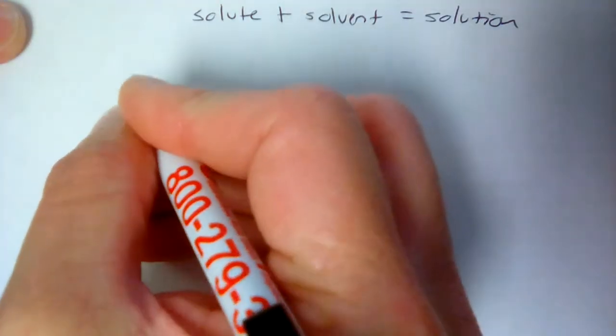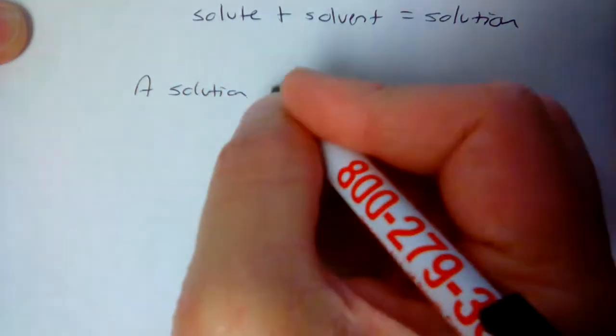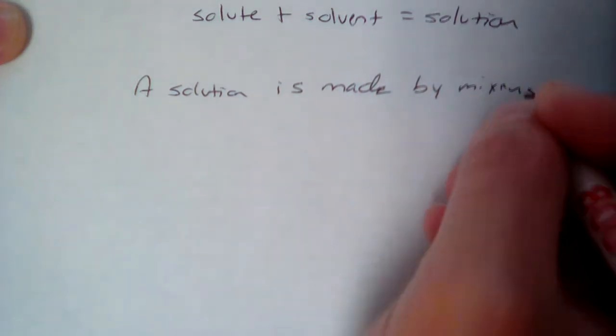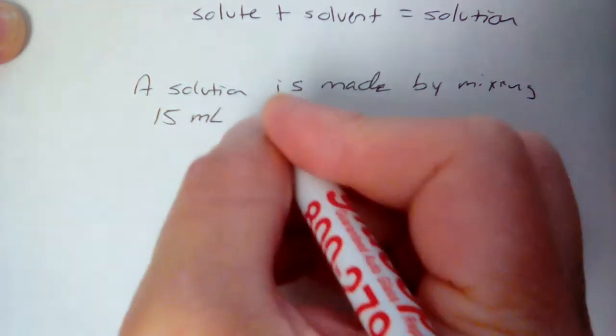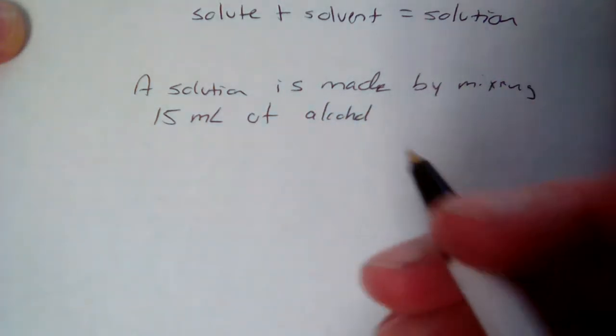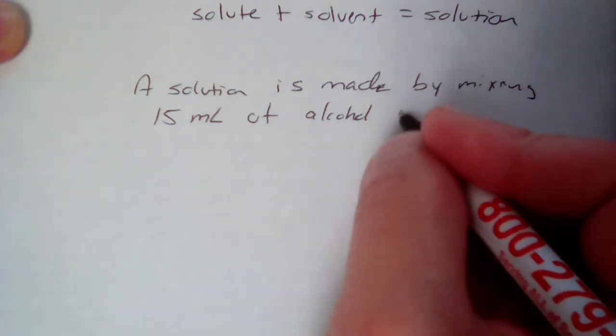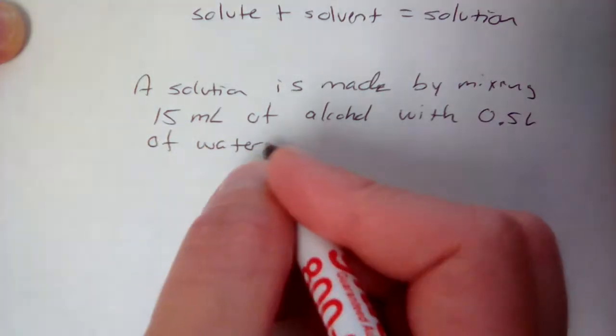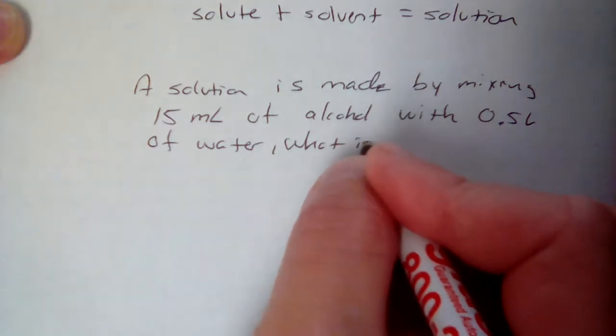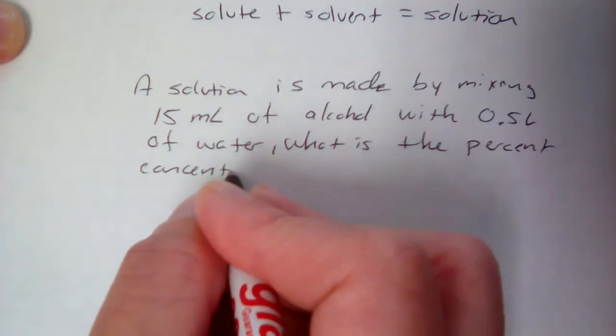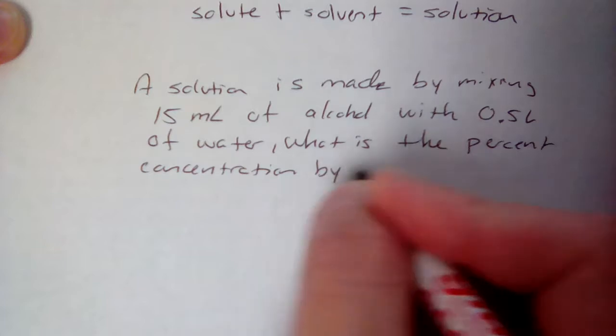So let's take a look at what a sample problem might look like. A solution is made by mixing 15 milliliters of alcohol, like isopropyl alcohol, rubbing alcohol might be what we're making here, with 0.5 liters of water. What is the percent concentration by volume?